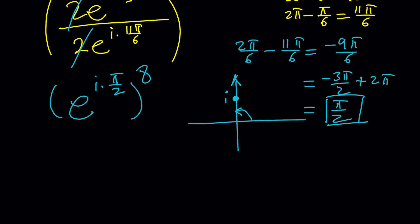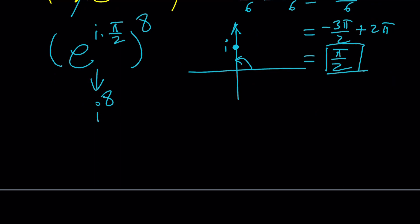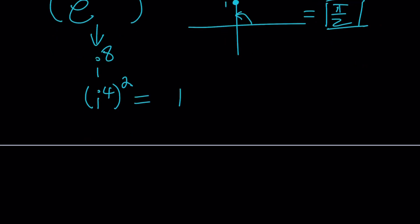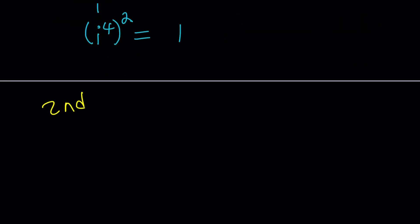We also use it to evaluate other things, but that's a different story. But now I can replace e^(iπ/2) with i. So the answer is going to be i to the 8th power. But remember, we looked at powers of i before. This is i to the 4th squared, but i^4 is always 1, so this is just going to be 1. So the answer is 1. Great. So let's go ahead and take a look at the second method.